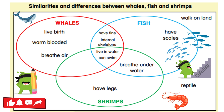Right in the middle is what all three groups have in common. In this case, whales, fish, and shrimp have in common that they live in water and can swim. Those spaces that they share together show what they have in common. For example, whales and shrimp don't share everything — we can use Venn diagrams to organize this information.